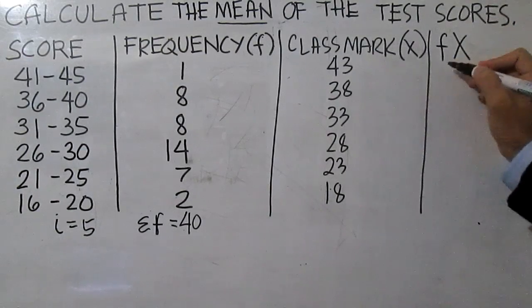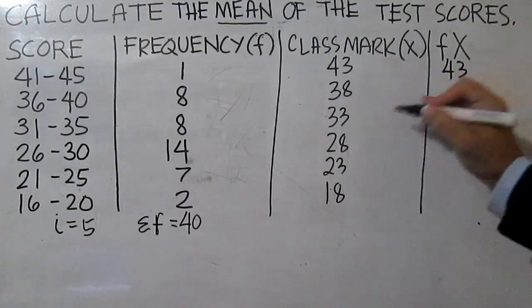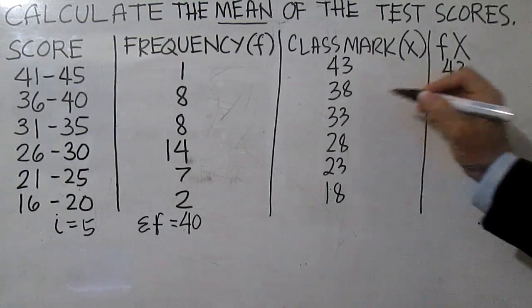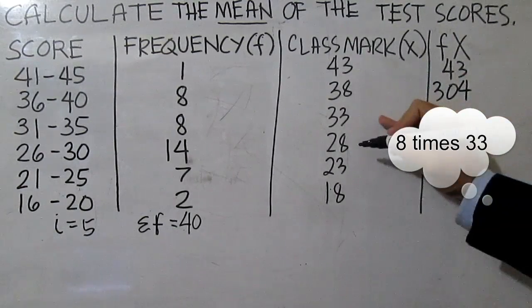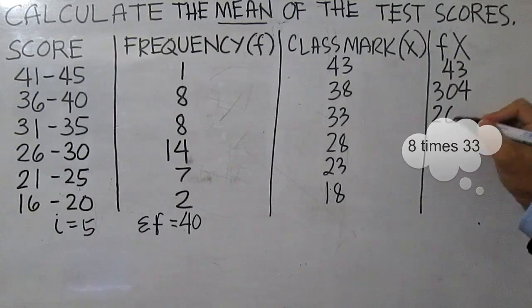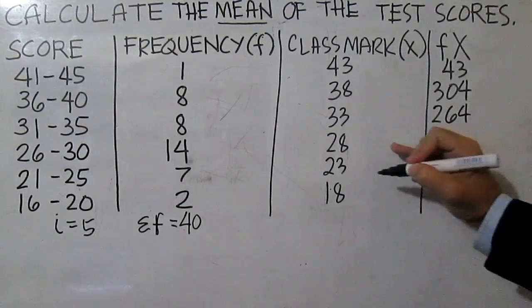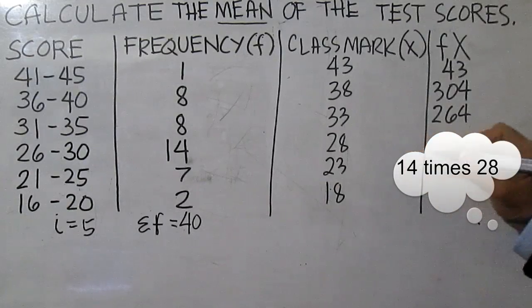1 times 43 is 43, 8 times 38 is 304, 8 times 33 is 264.